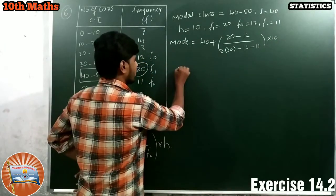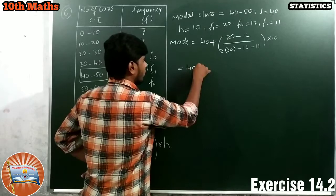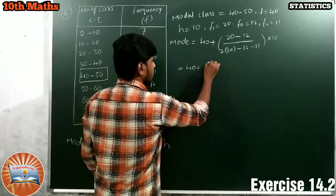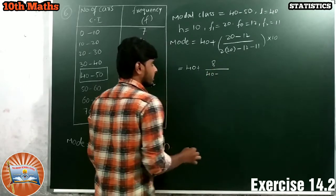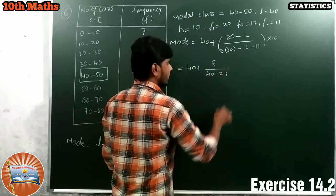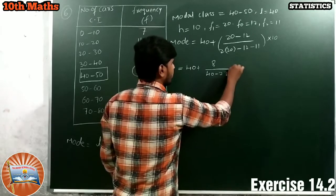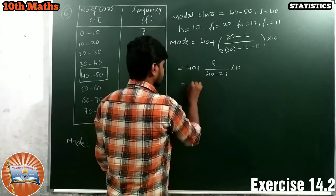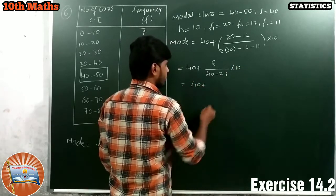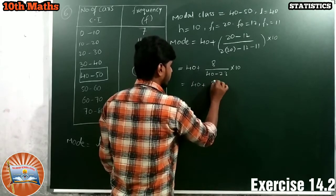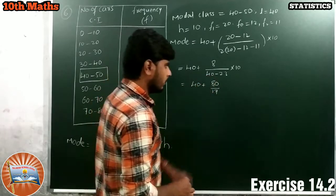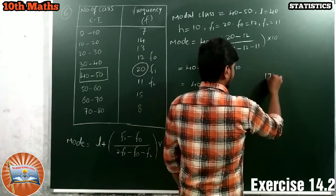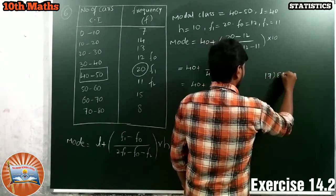Simplify. 40 plus 20 minus 12, 8 by 40 minus 23, into 10. 40 plus 8 by 17. We have to perform division. Take 17, 80 is divided.